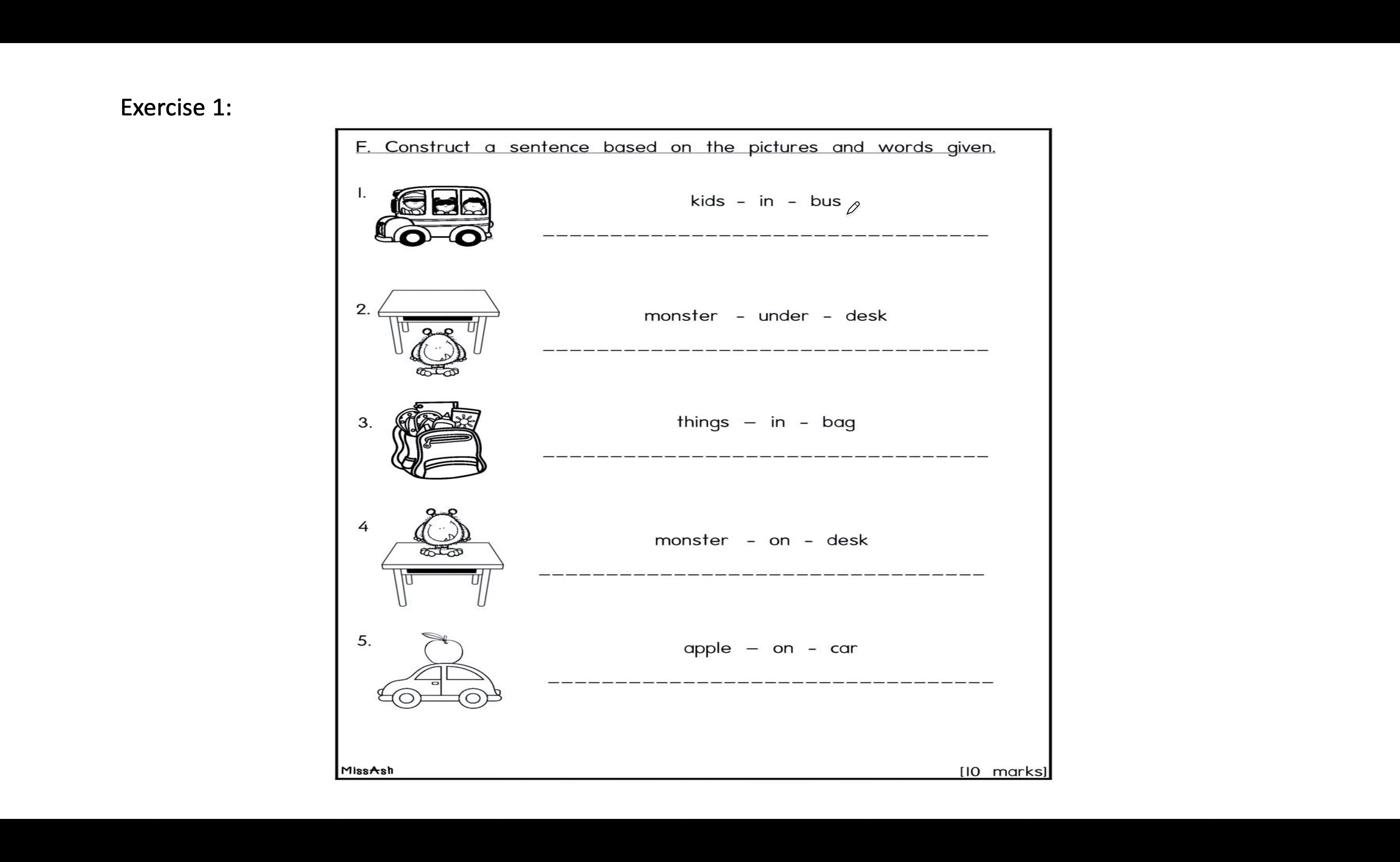有照片，然后有那个三个字我们要怎样做呢? The kids are in the bus. Or you can give me any other answers as long as it is logic and grammatically correct. 你们可以给我任何一个句子。总之就是用到这边这个 kids in bus，或者是 monster under desk，有用到这些字的句子。做一个句子出来，一个正确的句子。